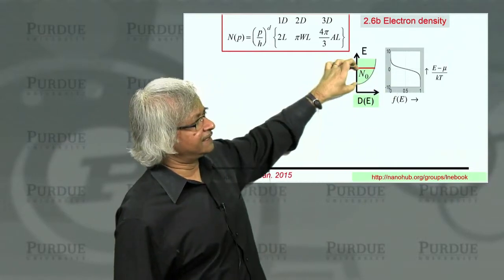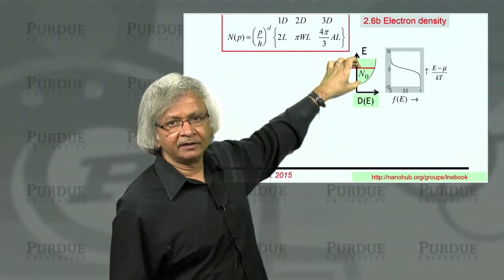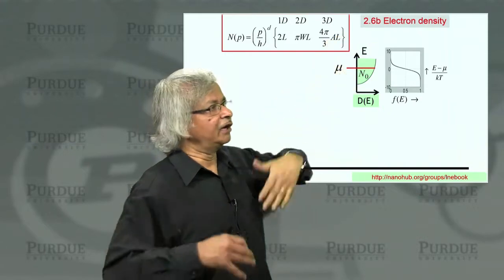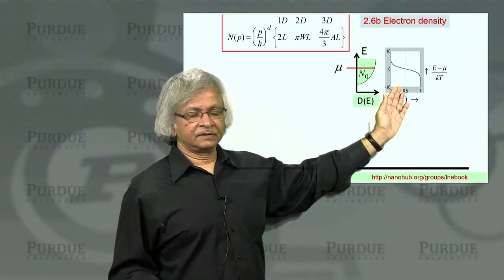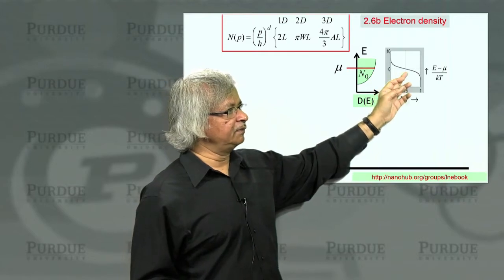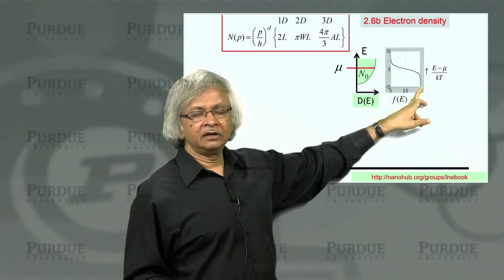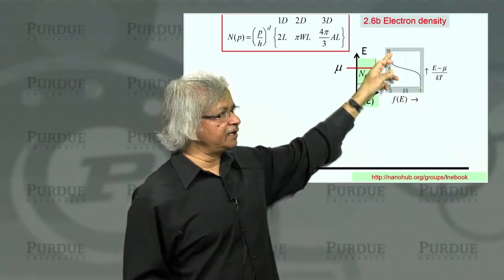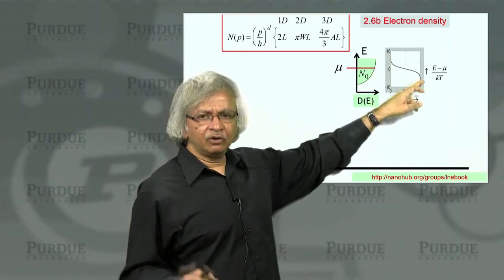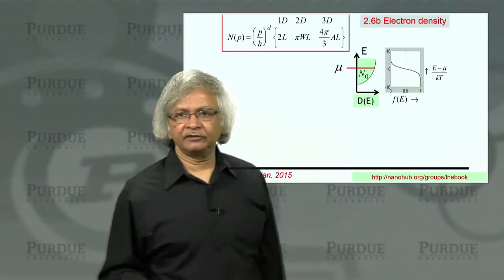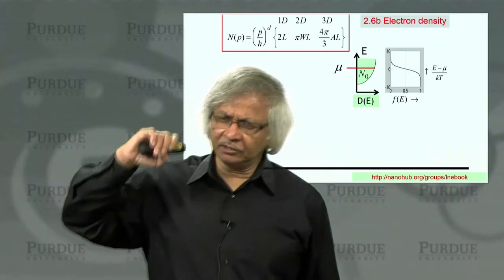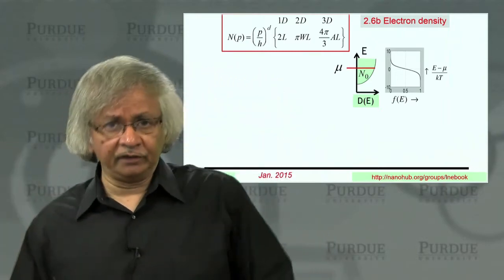We cannot quite say that the states below mu are occupied and above mu are empty. They are occupied according to this Fermi function. And the Fermi function well below mu is 1, well above mu is 0, and it changes in between over an energy range of the order of kT. That's something we talked about early in Unit 1, if you remember.